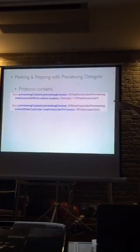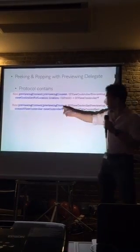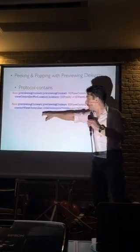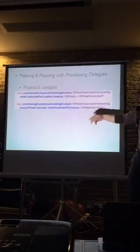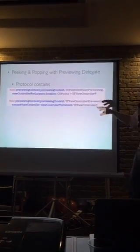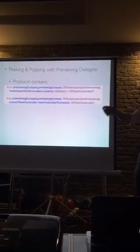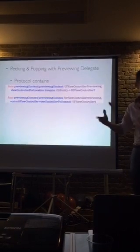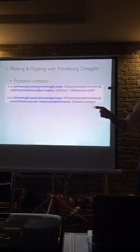Once the user commits and goes to the pop, this is the second method that's invoked. It's the commit view controller method, and it's this function that you need to handle to decide how you're going to hand over control to the full screen view of the item that's been popped.